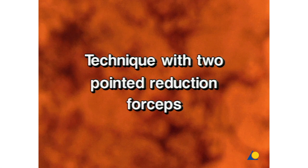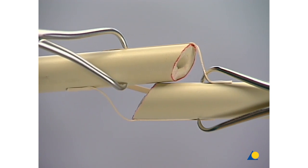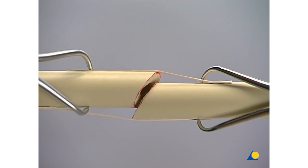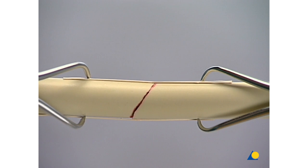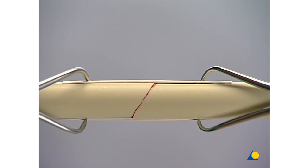Technique with Two-Pointed Reduction Forceps. The main fragments are each held with one reduction forceps. Use of two reduction forceps allows reduction in all six degrees of freedom of the fragment dislocation: extension-contraction, additive displacement in two perpendicular planes, axial angulation in two planes, and rotation around the longitudinal shaft axis. Thanks to the pointed reduction forceps, the devascularization of the cortex is only punctiform and therefore insignificant.